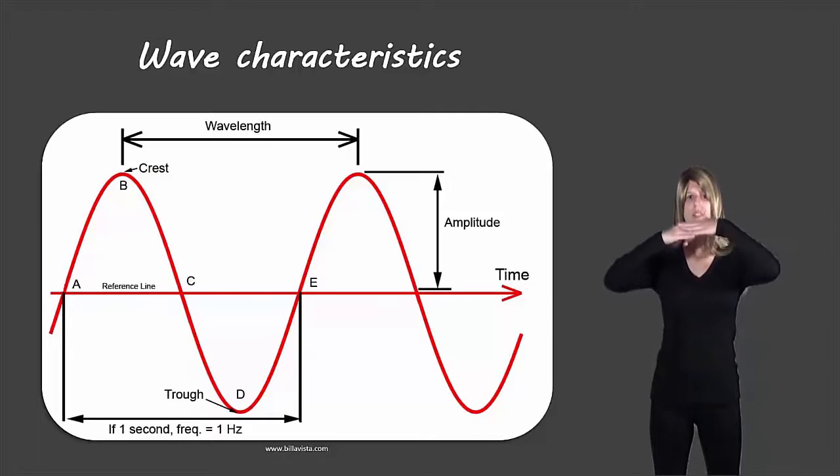Now if we go from the reference line, which is halfway between those two, so we go from the reference line to the crest, that's called the amplitude of the wave. Similarly, we could go from the reference line to the trough, and that would be the same distance since the reference line is halfway between, and that's the amplitude of the wave.